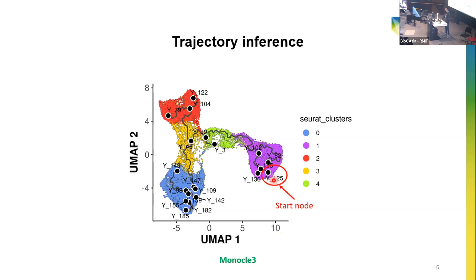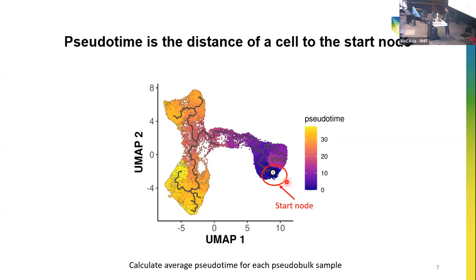With pseudo-bulk samples in hand, the next step is to obtain pseudo-time by performing trajectory analysis. Trajectory analysis is a popular downstream analysis in single-cell RNA sequencing to investigate cell differentiation along pseudo-time. Here we use Monocle 3 to perform the trajectory analysis. To order cells along the trajectory, we need to choose a start node manually — we chose node Y125. After selecting the start node, we can obtain the pseudo-time for each cell, which is the distance of a cell to the start node. We then calculate the average pseudo-time of all cells used for constructing each pseudo-bulk sample.